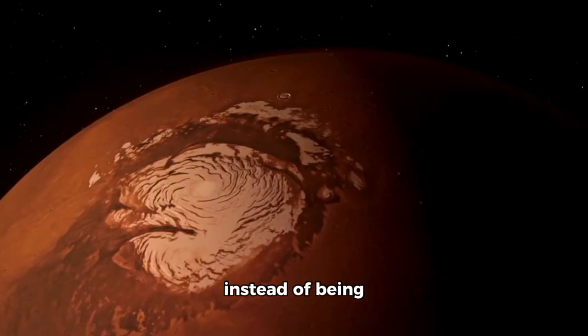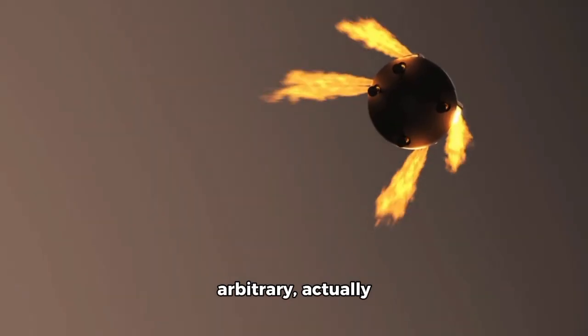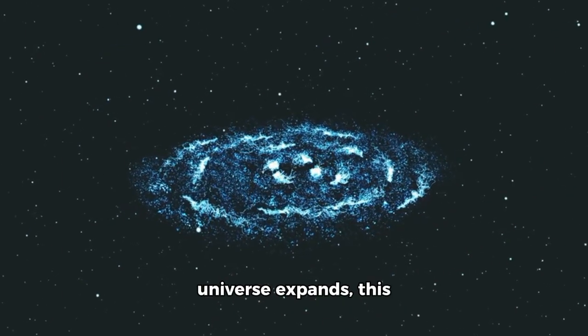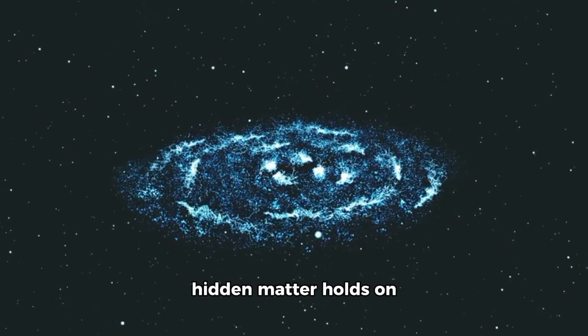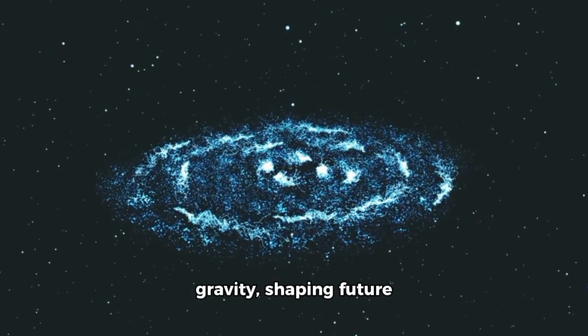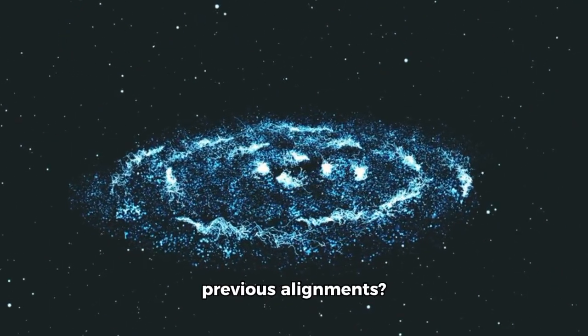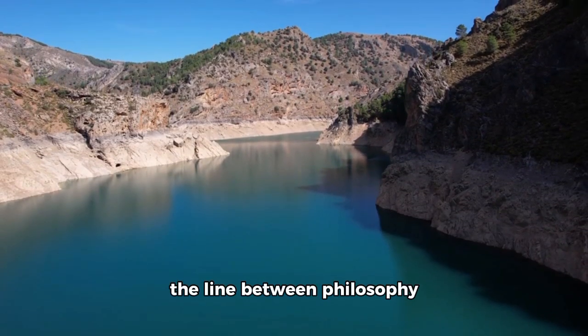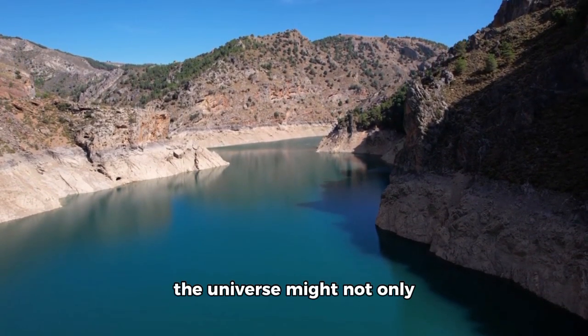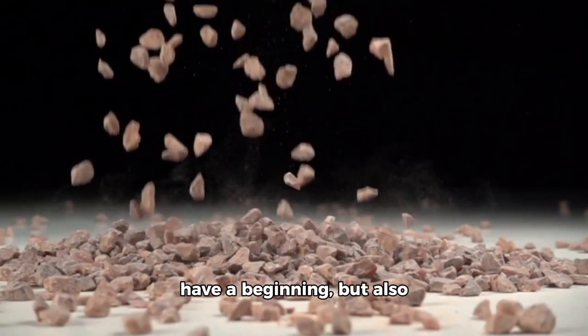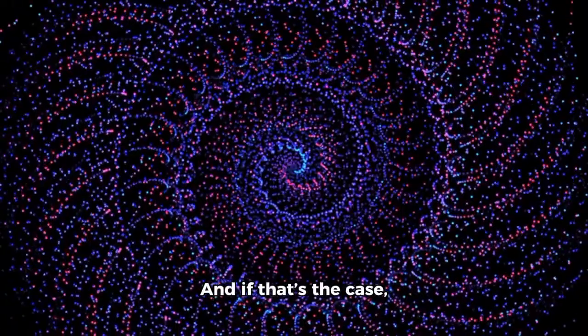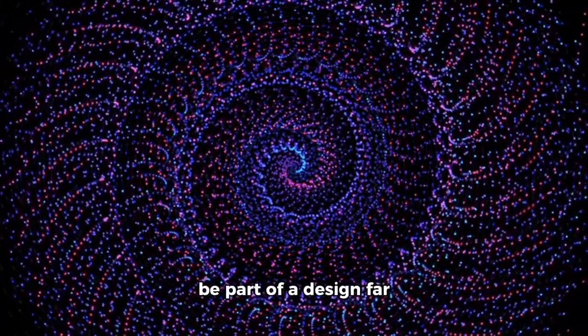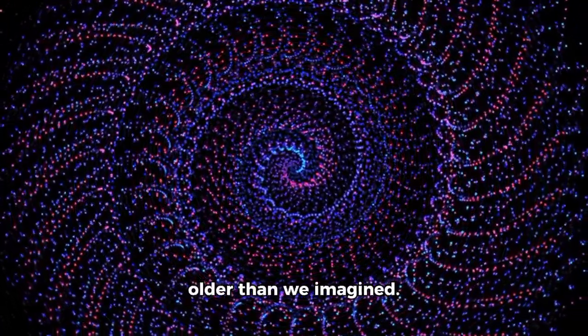What if dark matter, instead of being arbitrary, actually preserves traces of past cosmic structures? What if, as the universe expands, this hidden matter holds onto imprints left by gravity, shaping future galaxies based on previous alignments? It's a concept that blurs the line between philosophy and physics, implying that the universe might not only have a beginning, but also a memory. And if that's the case, then each spiral, every cluster, every void might be part of a design far older than we imagined.